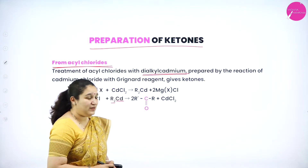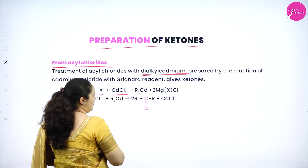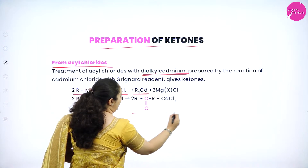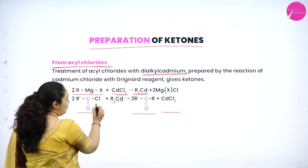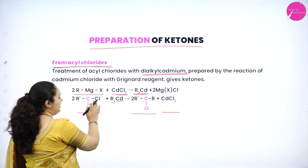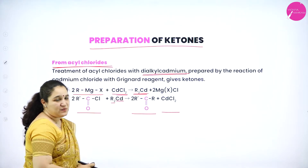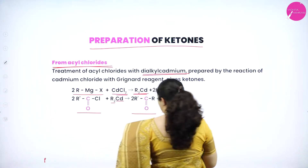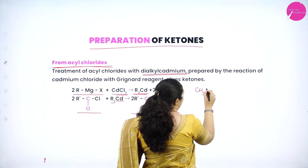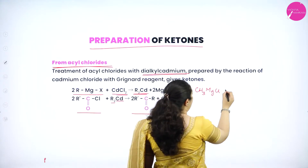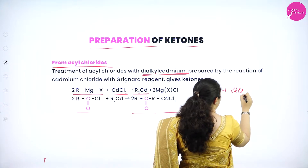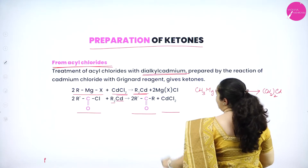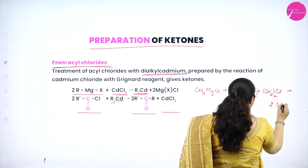How do we get dialkyl cadmium? When we take a Grignard reagent treated with cadmium chloride (CdCl2), we can get dialkyl cadmium. For example, taking CH3MgCl (a Grignard reagent) treated with CdCl2, what happens is you get (CH3)2Cd — dialkyl cadmium — plus 2 MgCl2.